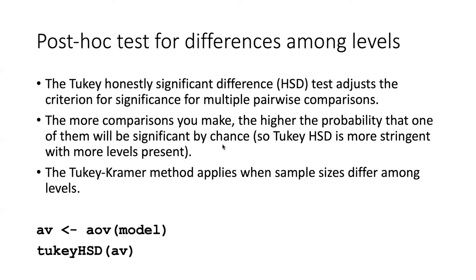The Tukey HSD test assumes that the number of samples per level is the same — what we call a balanced experiment. If the sample sizes are not the same, there is an adjustment called the Tukey-Kramer method that is used for different sample sizes among the levels.